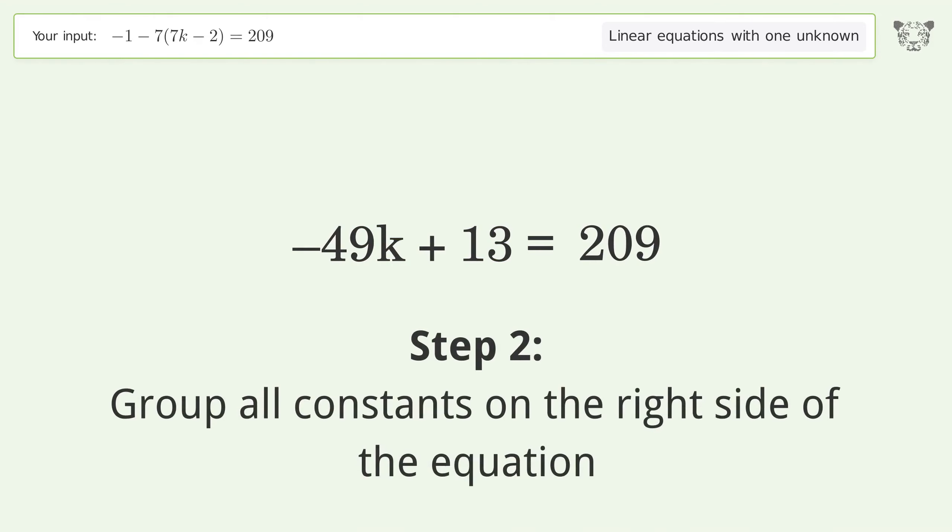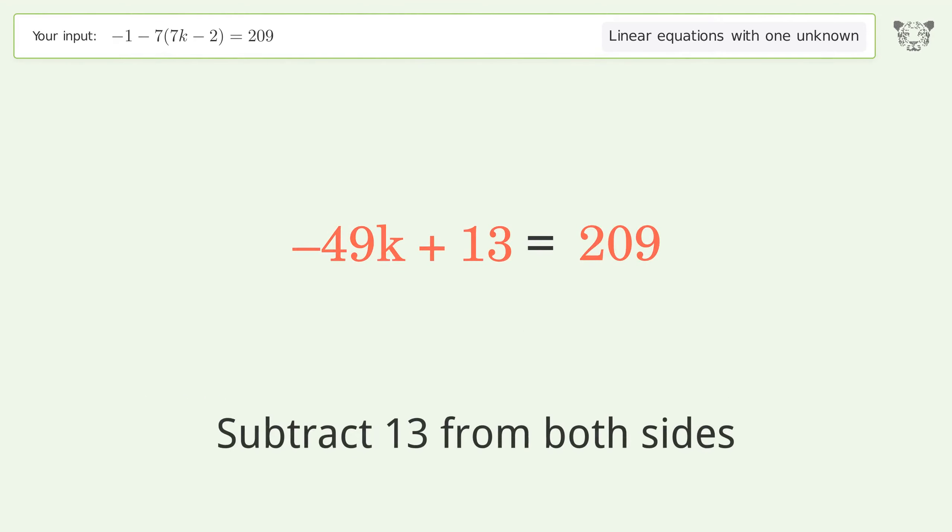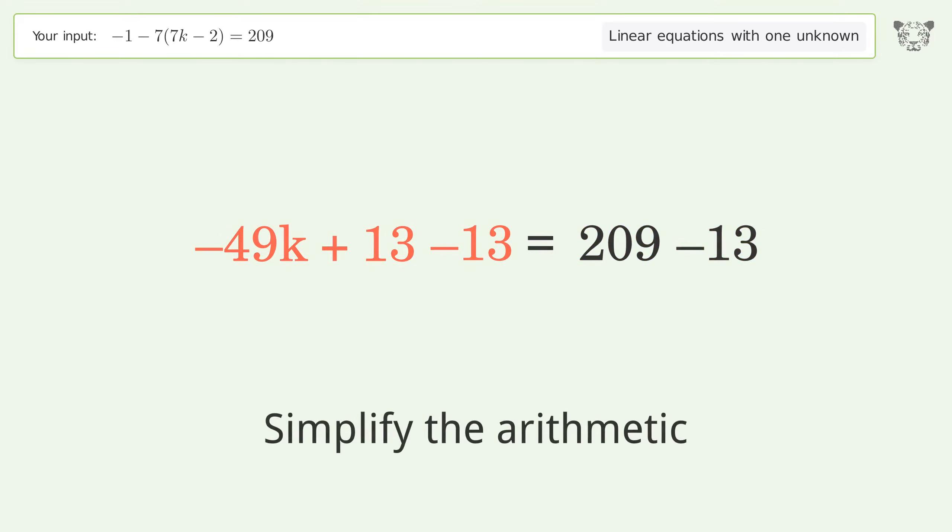Group all constants on the right side of the equation. Subtract 13 from both sides. Simplify the arithmetic.